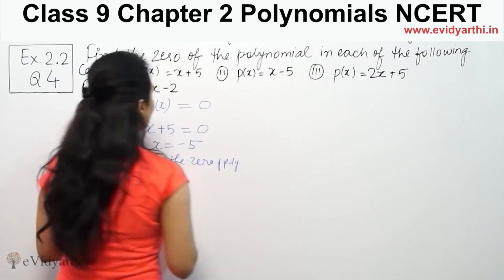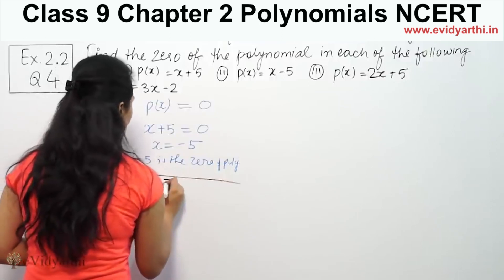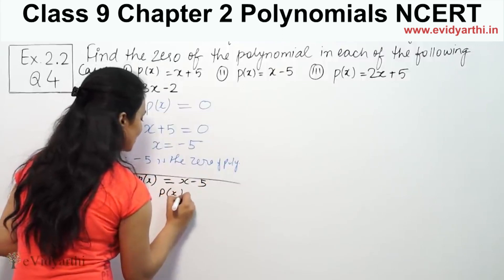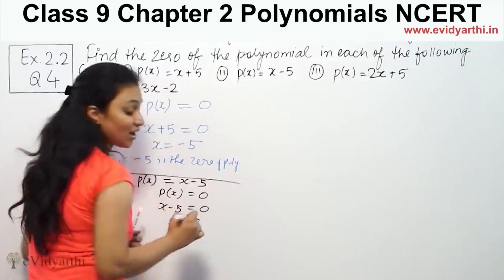Part number second, which is p(x) = x minus five. Now again, p(x) equal to zero. That means x minus five equal to zero. So x is equal to five.